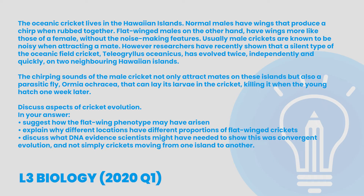Let's look at a Level 3 exam question example and work through our steps. 'The oceanic cricket lives in the Hawaiian Islands. Normal males have wings that produce a chirp when rubbed together. Flat-winged males, on the other hand, have wings more like those of a female, without the noisemaking features. Usually, male crickets are known to be noisy when attracting a mate. However, researchers have recently shown that a silent type of the oceanic field cricket, Teleogryllus oceanicus, has evolved twice independently and quickly on two neighbouring Hawaiian islands. The chirping sounds of the male cricket not only attract mates on these islands, but also a parasitic fly, Ormia ochracea, that can lay its larvae in the cricket, killing it when the young hatch one week later.' Discuss aspects of cricket evolution. In your answer, suggest how the flat-winged phenotype may have arisen; explain why different locations have different proportions of flat-winged crickets; and discuss what DNA evidence scientists might have needed to show that this was convergent evolution, and not simply crickets moving from one island to another.